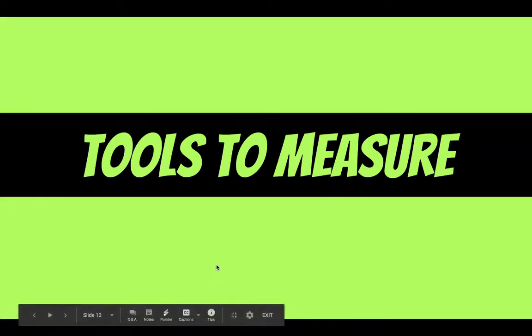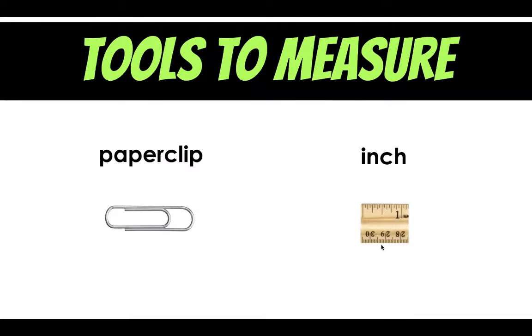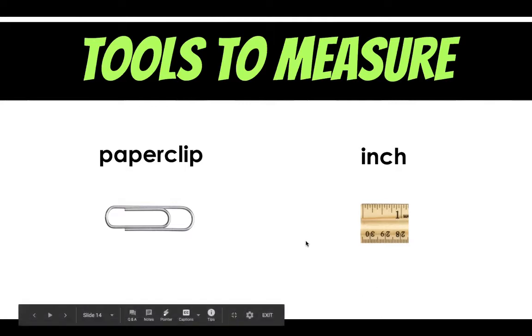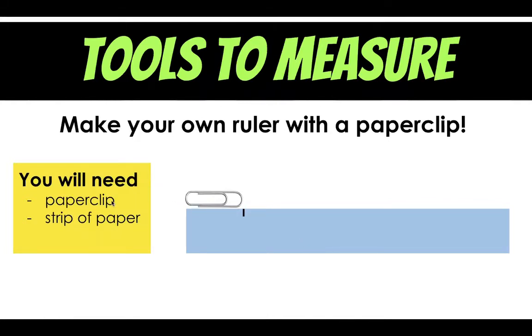Not all of you may have a ruler at home. So to measure inches you can use a paperclip like I showed you when this video first started. It needs to be a small normal paperclip, not one of those jumbo paperclips. But a paperclip is just about an inch long. You can make your own ruler with a paperclip if you don't have a ruler at home. So you will need a paperclip and a strip of paper. So I have my strip of paper here and my paperclip.